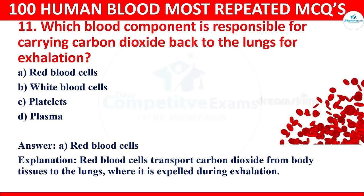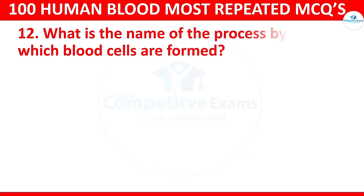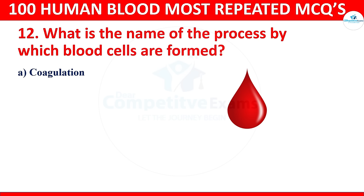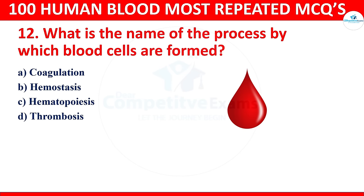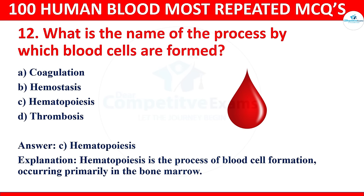Question 12: What is the name of the process by which blood cells are formed? Options: coagulation, hemostasis, hematopoiesis, or thrombosis. The correct answer is hematopoiesis. It is the process of blood cell formation occurring primarily in the bone marrow.